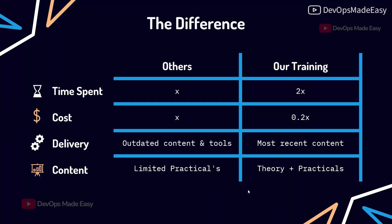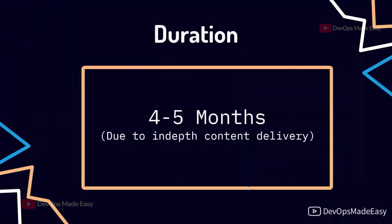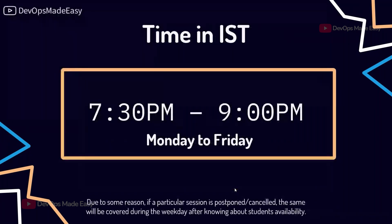We believe equally in both theory and practicals, so both will be covered. We take four to five months because the content is huge — we cannot complete it in three to four months. We focus heavily on Docker, Kubernetes, Helm, and Jenkins.